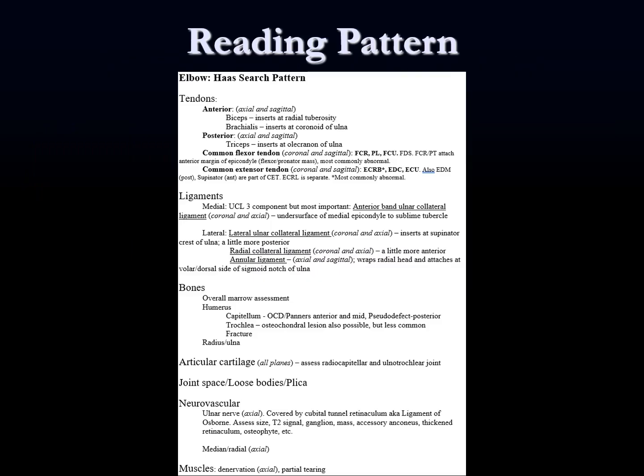This is the reading pattern. It emphasizes tendons first, then ligaments, then bones, articular cartilage, joint spaces, loose bodies, plica, neurovascular structures, and then muscles — an outside-in approach. Throughout the presentation I'll snip parts of this template so we know which portion of the reading pattern we're looking at. Once you get comfortable going through this pattern and seeing the anatomy, you'll be more comfortable reading these MRIs.